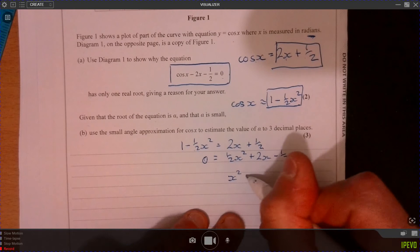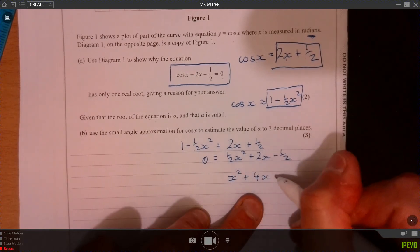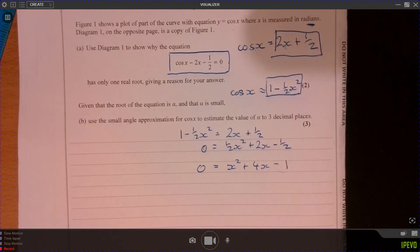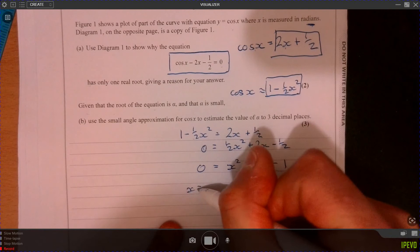So that gives us x squared plus 4x minus 1 equals 0. And you just now need to solve that there. And we should get, you'll get two solutions.